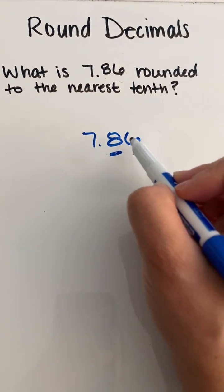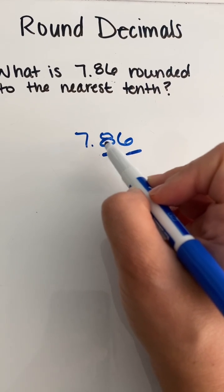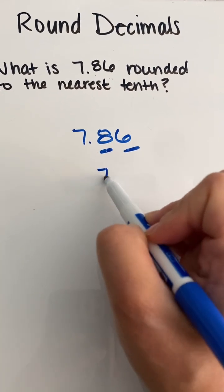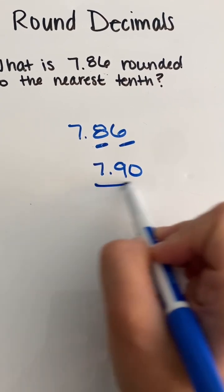Well six is above five so we are going to add 0.1 to the eight which will give us 7.90. That's to our nearest tenth.